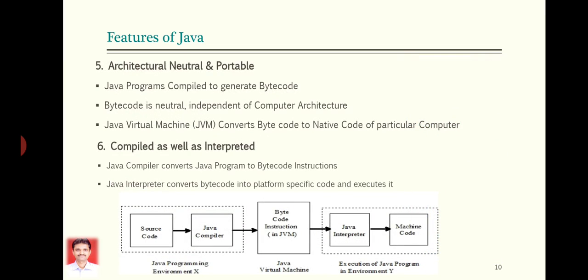Next feature is Java is architectural neutral and portable. Basically, if you see the figure here, the Java source code is compiled by Java compiler, and Java compiler generates byte code instructions. It does not generate machine code directly, it generates byte code. What is byte code? Byte code is an intermediate between source and native machine code, and byte code is neutral. Yes, it is not dependent on computer architecture or machine. It has nothing to do with a particular computer machine.